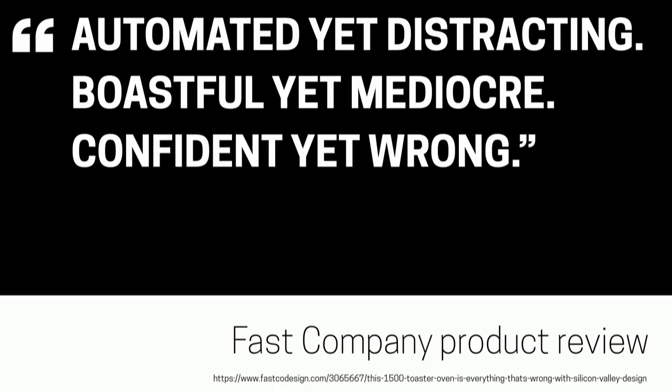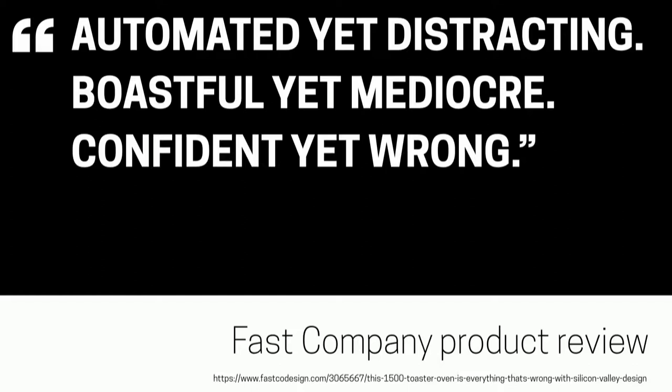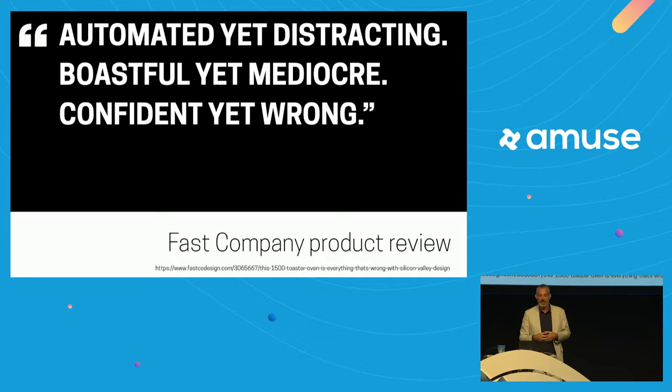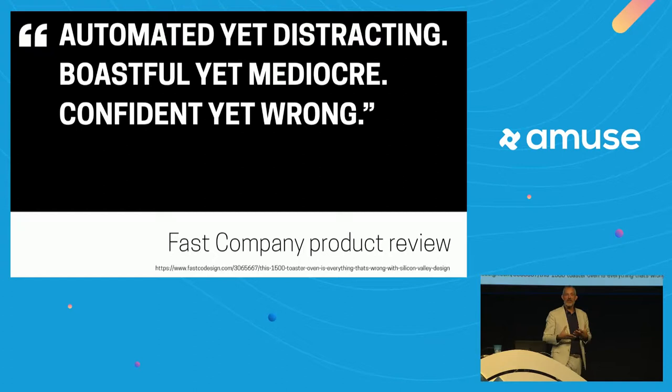Here's an excerpt from a Fast Company review of another automated kitchen device, and it doesn't even matter which one, because the description feels so familiar as users of first-generation technology: 'automated yet distracting, boastful yet mediocre, confident yet wrong.' We're dealing with fragile technologies used in ways they aren't yet ready for — or maybe never should have been used for — and these are signals that we don't understand the grain of the technology.